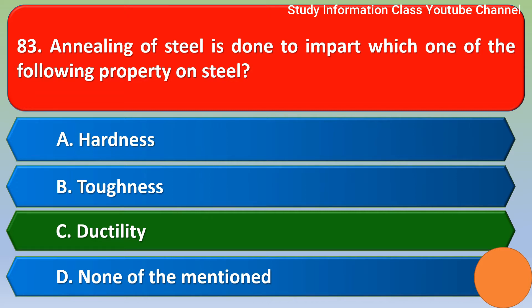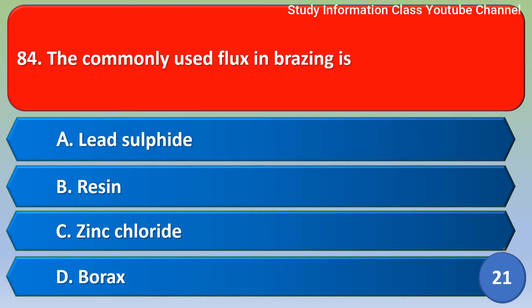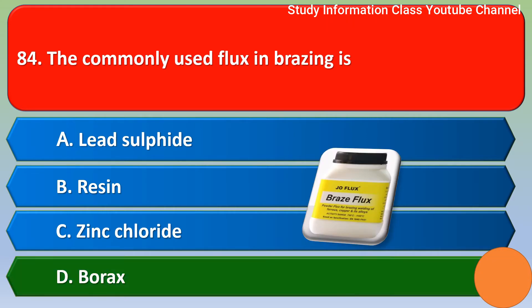Next question: The commonly used flux in brazing is option A lead sulfide, option B resin, option C zinc chloride, option D borax. The correct answer is option D, borax.